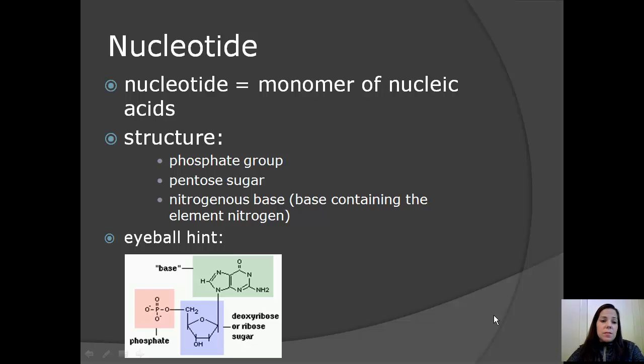Let's begin with the building blocks. Nucleotides are the monomers or building blocks of nucleic acids. So when we add many nucleotides together, then we would create a nucleic acid. The structure of nucleic acids is broken down into three parts. First, we have the phosphate group. Then we have the pentose sugar. And then finally, we have the nitrogenous base, and the base contains element nitrogen.